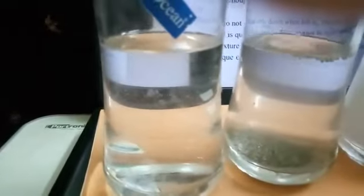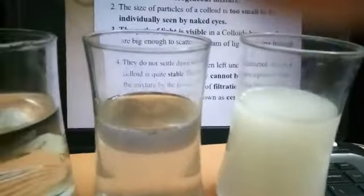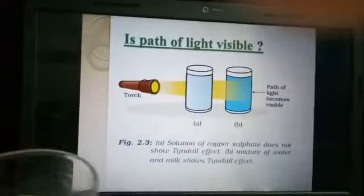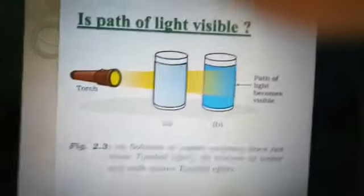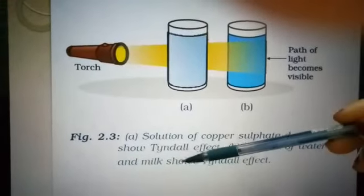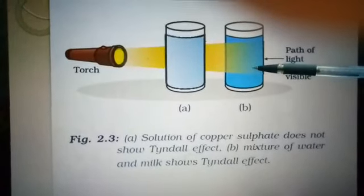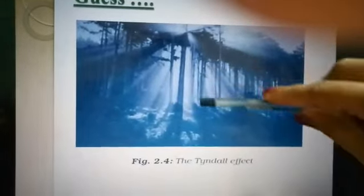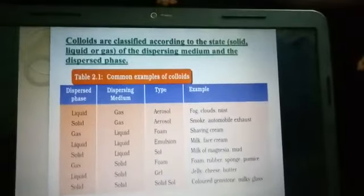When comparing visibility of the path of light: in a copper sulfate solution (true solution), the path of light is not visible. In a mixture of water and milk (colloid), the path of light is visible. This scattering of light is known as the Tyndall effect. Even in a forest, the path of light through trees is visible — this is also an example of the Tyndall effect. The scattering of light by colloidal particles is known as the Tyndall effect.